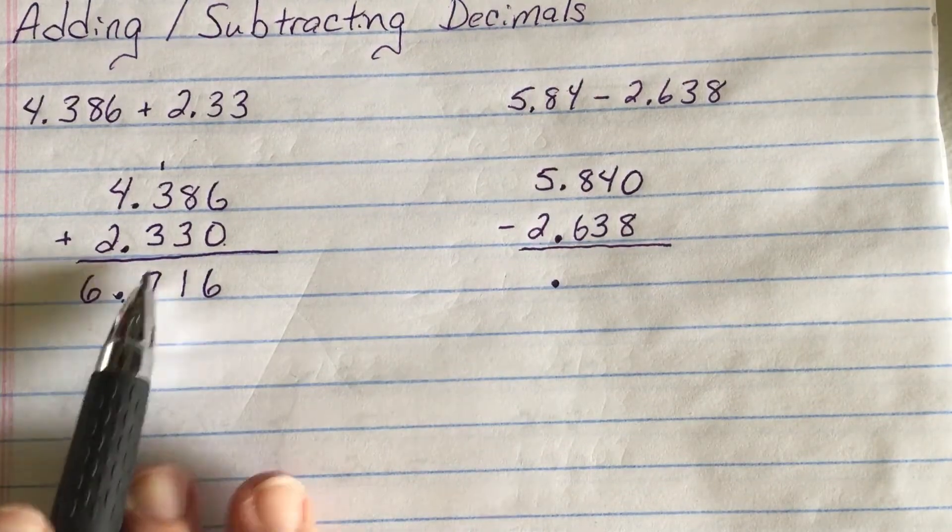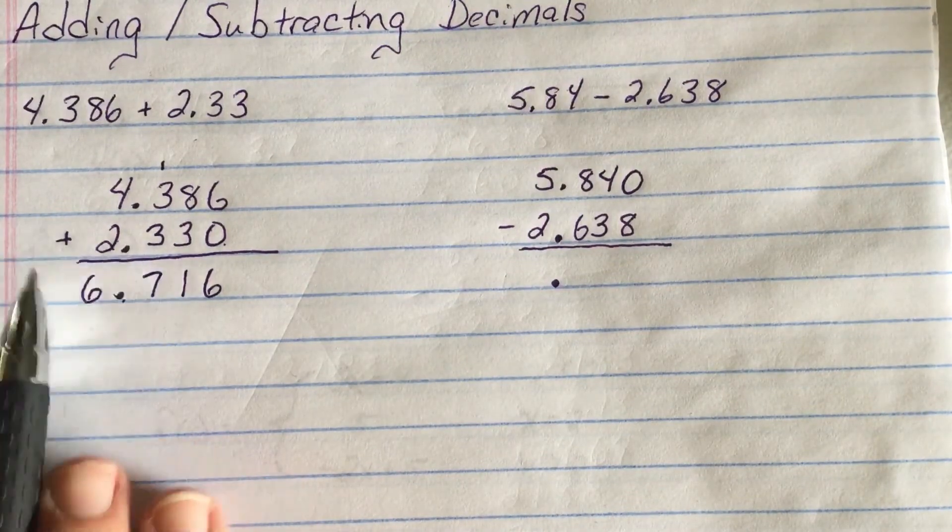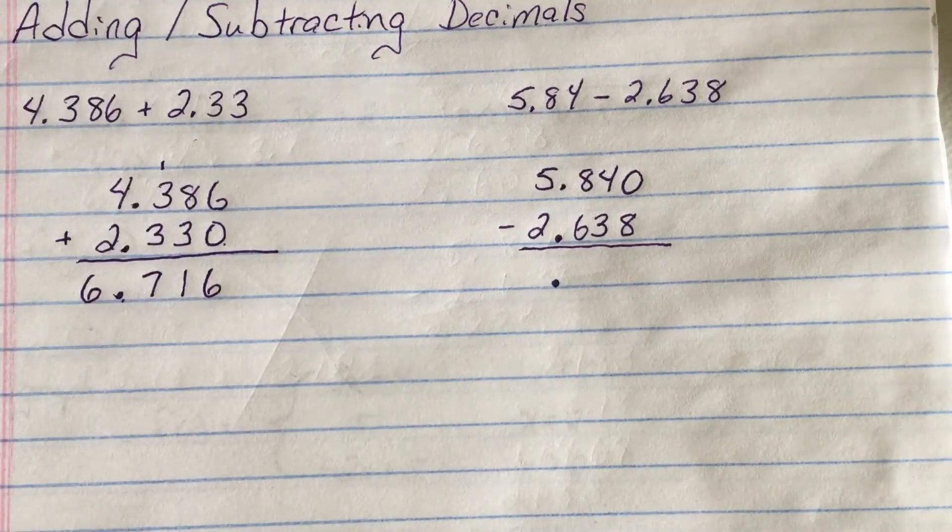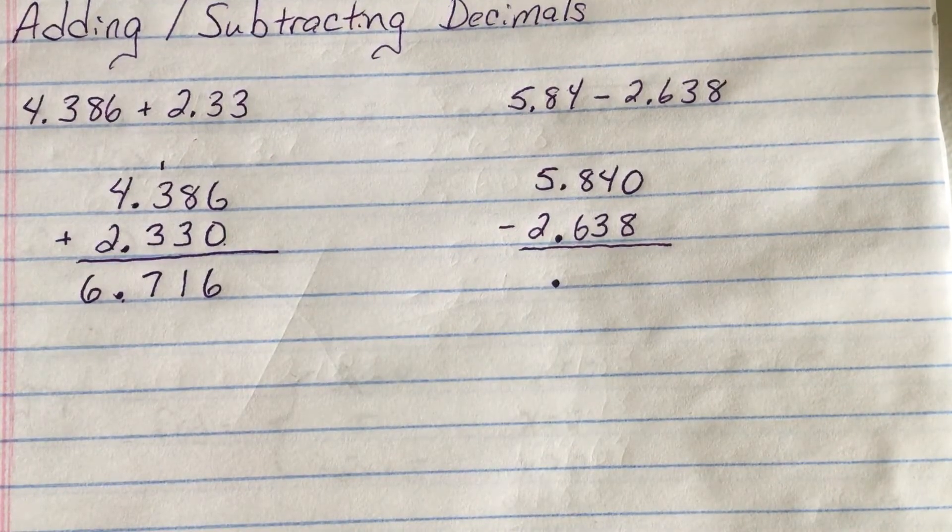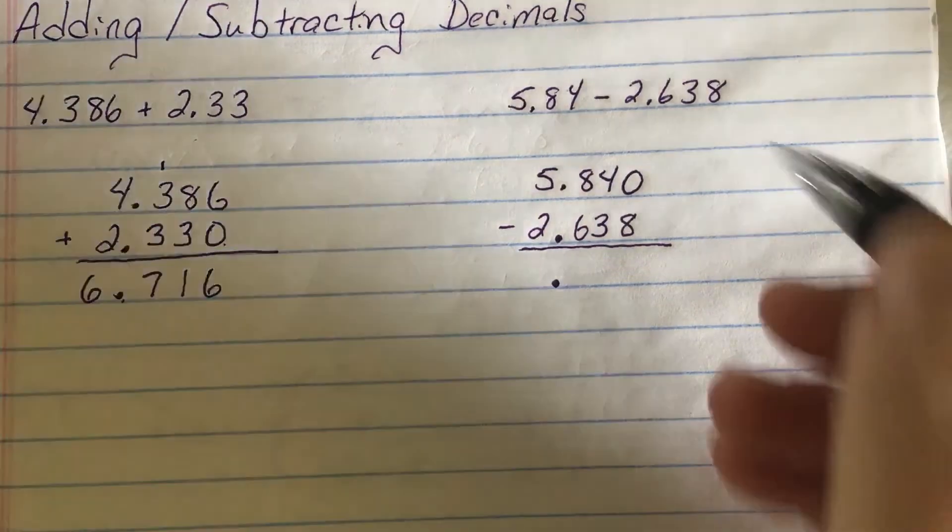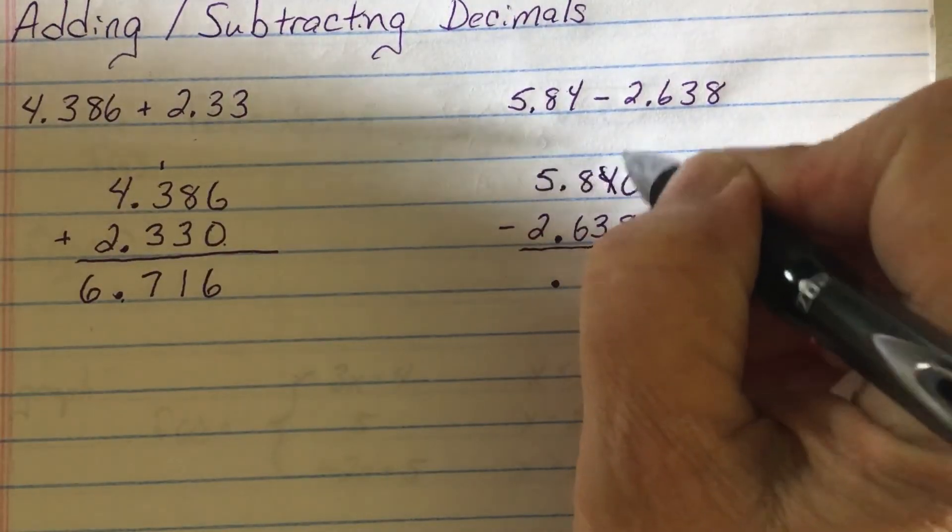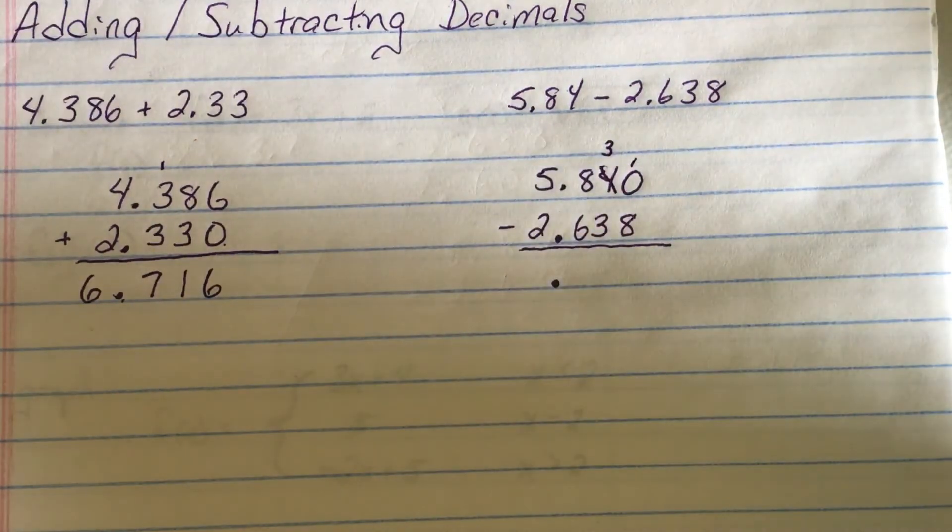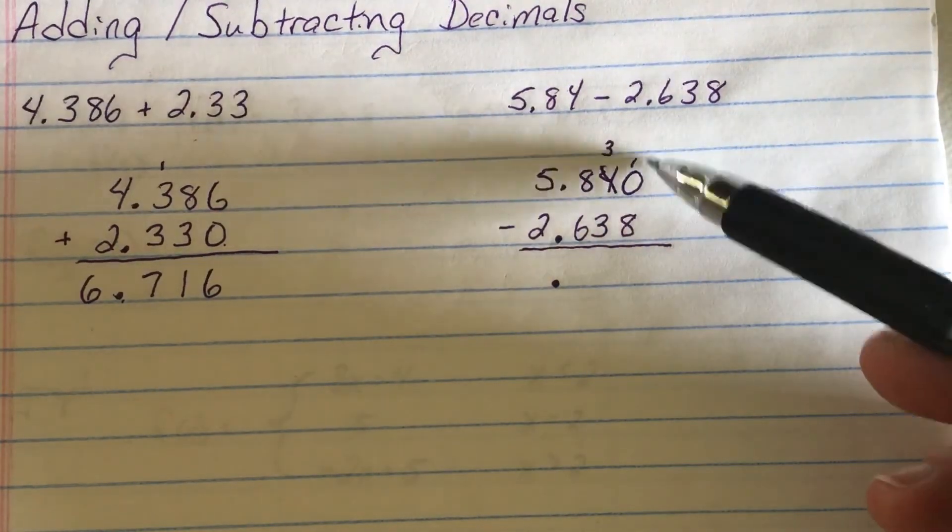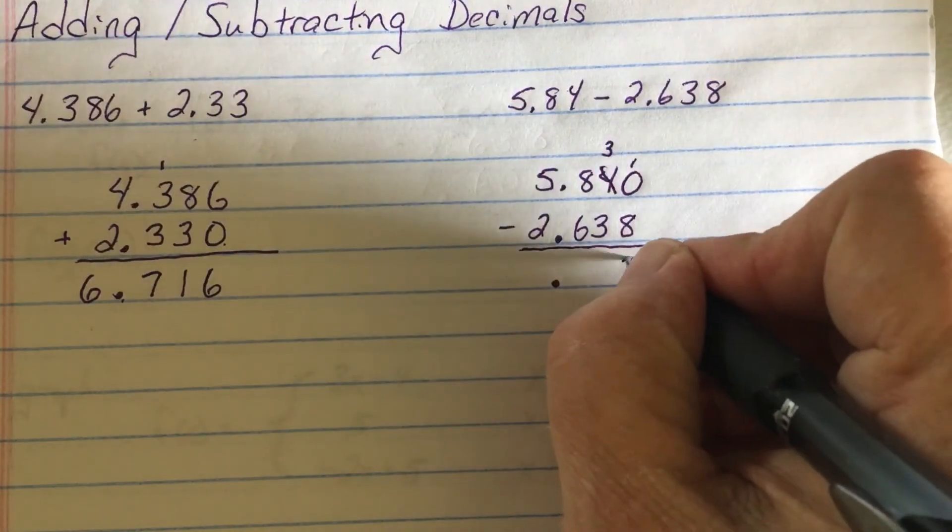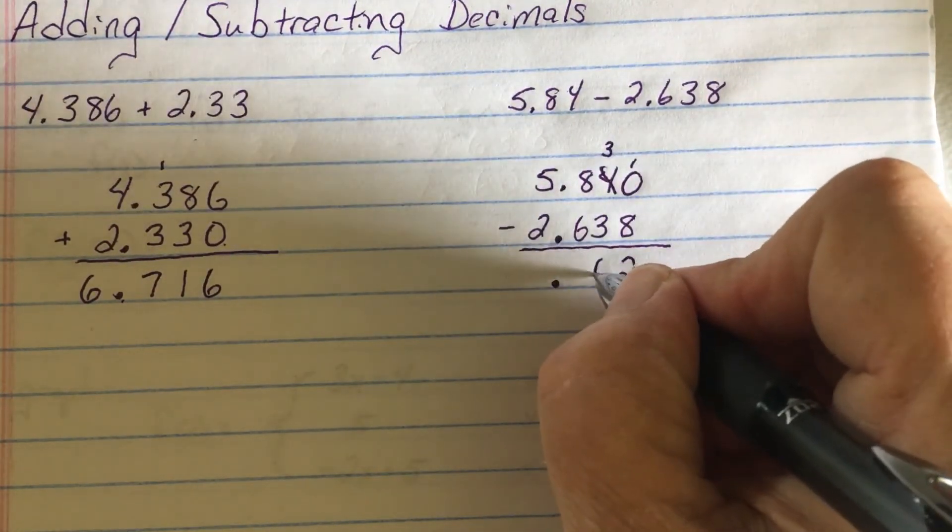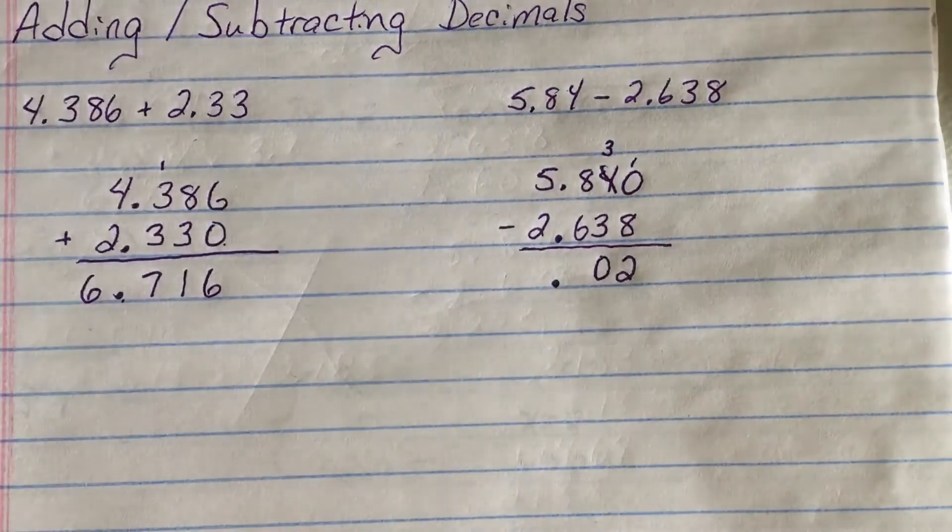Now, here, when I came up with more than ten, I carried forward. Here, I'm going to have to borrow because zero minus eight, I can't subtract. So I got to borrow ten from the number before. So the four becomes actually a three, and the zero becomes ten. So ten minus eight is two. Three minus three is zero. Now that zero is needed because it's in the middle of the number.